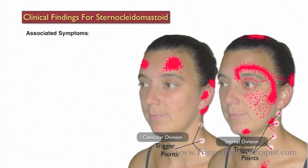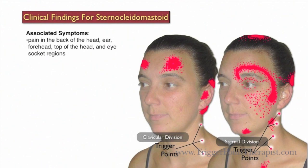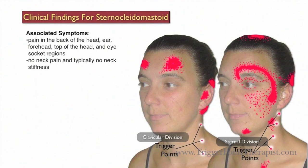Associated symptoms for the sternocleidomastoid trigger points: clients may complain of pain in the back of the head, ear, forehead, top of the head, and the eye socket regions. Although this muscle is located in the neck, there is typically no neck pain and no neck stiffness associated with SCM trigger points.